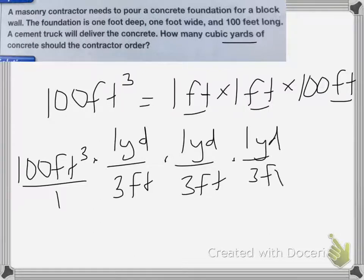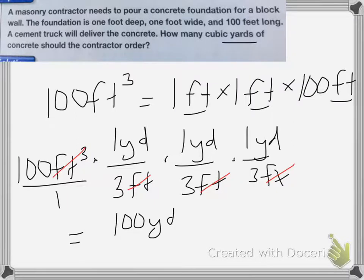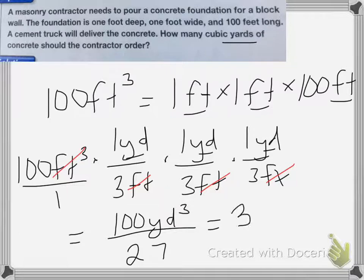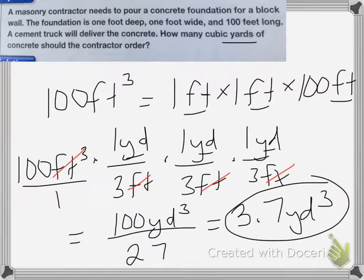It will be 100 feet cubed times one yard over three feet, applied three times. Those feet cancel because I have three of each. I end up with 100 yards cubed divided by three times three times three, which is 27. So 100 divided by 27 is equal to 3.7 yards cubed. We would probably want to round that up to four yards to make sure there's enough concrete.